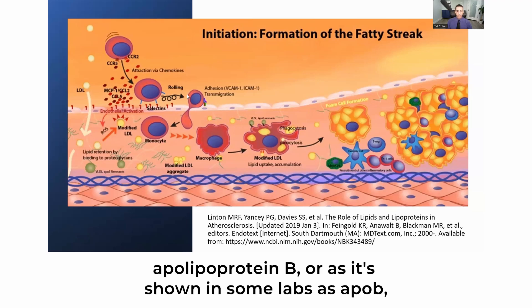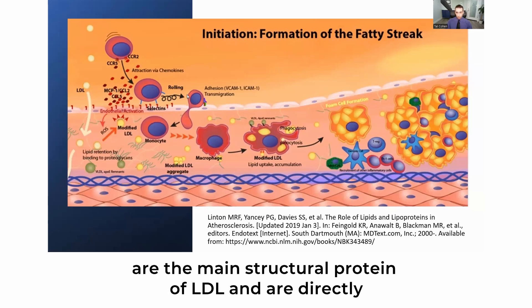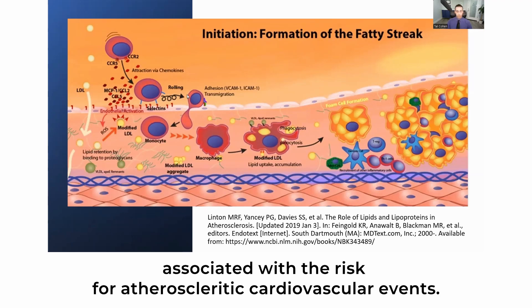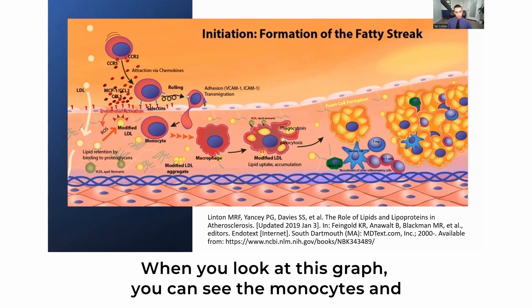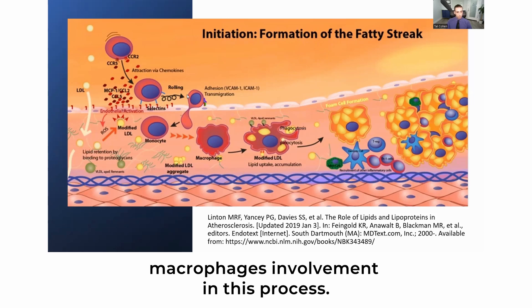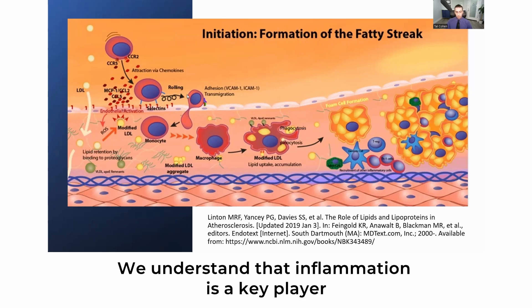Elevated levels of LDL cholesterol and apolipoprotein B — shown in some labs as ApoB — are the main structural protein of LDL and are directly associated with the risk for atherosclerotic cardiovascular events. However, now we understand, looking at this graph, that monocytes and macrophages are involved in this process. We understand that inflammation is a key player.